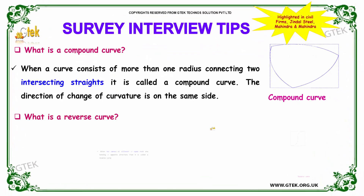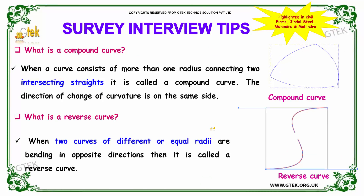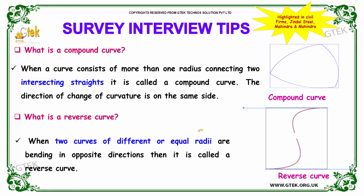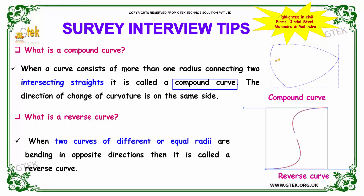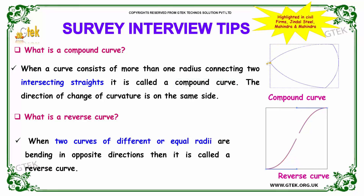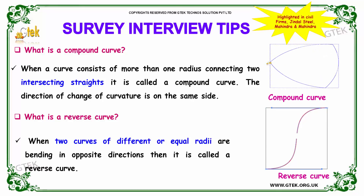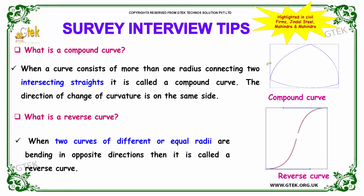Our next question is: what is a compound curve? When a curve consists of more than one radius connecting two intersecting straights, it is called a compound curve. The direction of the change of curvature will be on the same side for a compound curve.